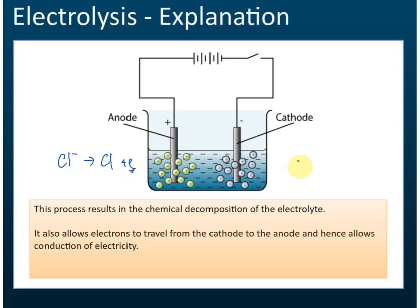And if the positive ions here are sodium ions, then this sodium ion receives electrons and becomes sodium metal — a sodium element. So these two elements will be deposited around the cathode and anode.